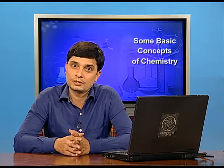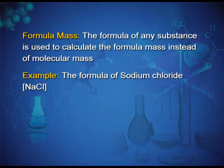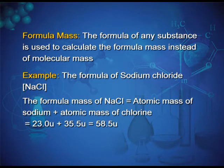For ionic compounds, we use formula mass instead of molecular mass. For example, the formula mass of NaCl = atomic mass of sodium (23.0 u) + atomic mass of chlorine (35.5 u) = 58.5 u.